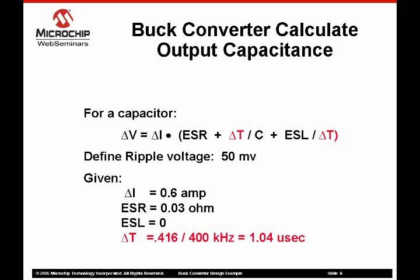The voltage ripple across the output capacitor is the sum of the ripple voltages due to the effective series resistance, the voltage sag due to load current that must be supplied by the capacitor as the inductor is discharged, and the voltage ripple due to the capacitor's effective series inductance. The ESL specification is usually not specified by the capacitor vendor. For this example, we will assume that the ESL value is 0.